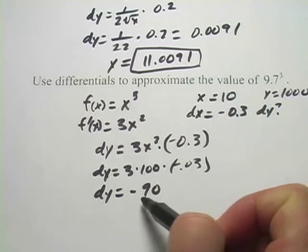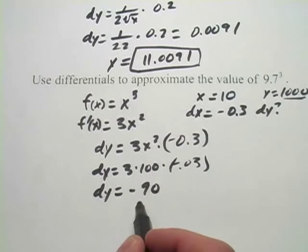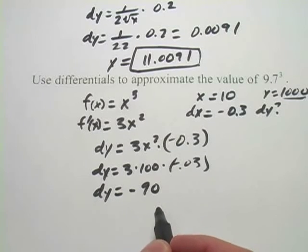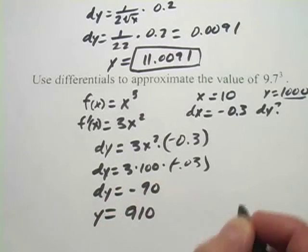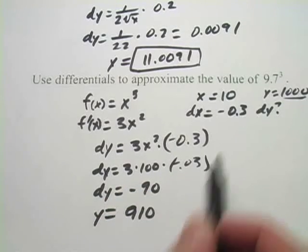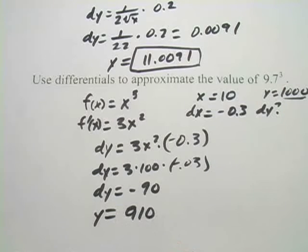So to get our final y value, we would take the original y here and add this. In this case, we're actually going to be subtracting 90, so we get y equals 910. And if you plug 9.7 into your calculator and cube it, you'll get something pretty close to 910. So that is a little bit about how to use differentials to approximate square roots and cubes and things like that.